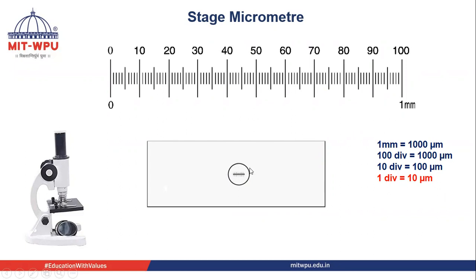We have to keep this stage micrometer on the stage. If we enlarge it, we can see the scale is one millimeter, and there are 100 divisions on this scale. As we know, one millimeter is equal to 1000 micrometers. So 100 divisions equal 1000 micrometers, meaning 10 divisions equal 100 micrometers, and one division is equal to 10 micrometers.